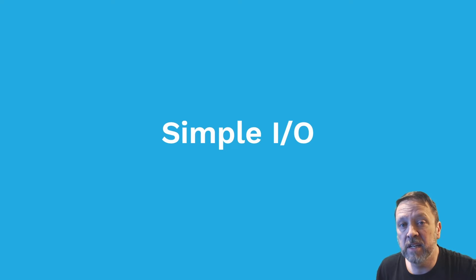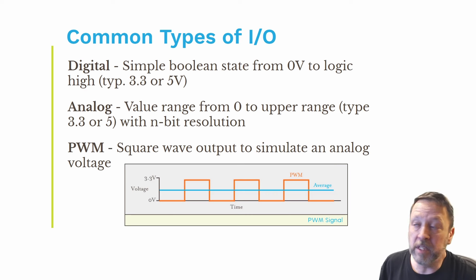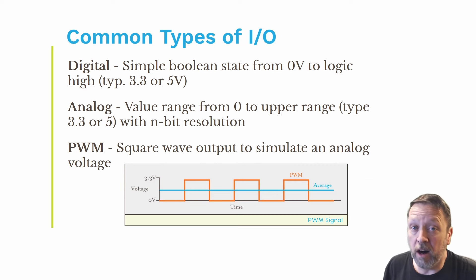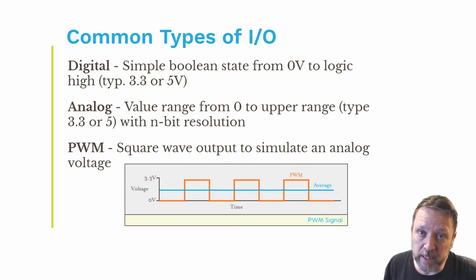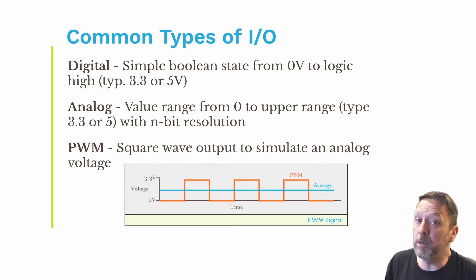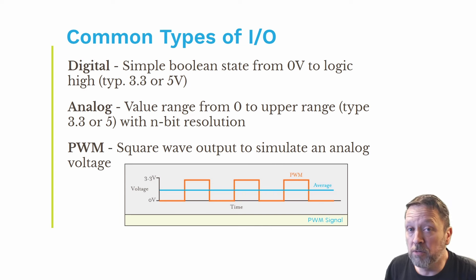So now let's take a look at some simple I/O examples. Generally speaking, there are three types of simple basic I/O. One is digital I/O — that is a simple Boolean state, it's either off or it's on. Off being zero volts, on being whatever the logic voltage of your platform is. The Feather F7, that logic voltage is 3.3V. On a Raspberry Pi, it is 5V. Digital simply means either there is no voltage there, or voltage is present at the logic level.